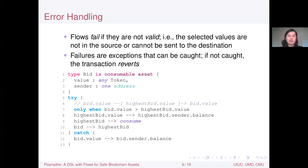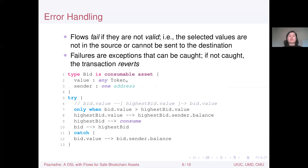We declare a new type called bid, which is a consumable asset. It has a value represented by a token, and a sender representing the person who placed the bid. We have a try-catch block: the 'only one' on line seven is a precondition implemented via a flow — if it fails, an exception is thrown and caught, going to the catch block. If it succeeds, we refund the highest bid's value, destroy that bid, and replace it with the new bid. Otherwise in the catch block, we refund the bid that was placed.